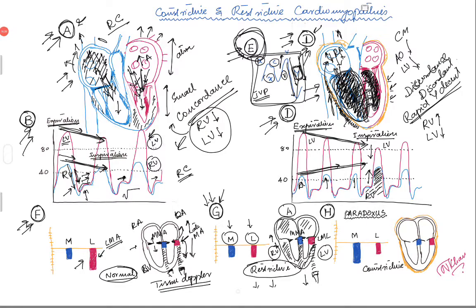With this we come to the last picture — constrictive cardiomyopathy. A very interesting thing happens here, and in echo textbooks it is described as annulus paradoxus — the physiology is completely reversed compared to normal and to restrictive cardiomyopathy.